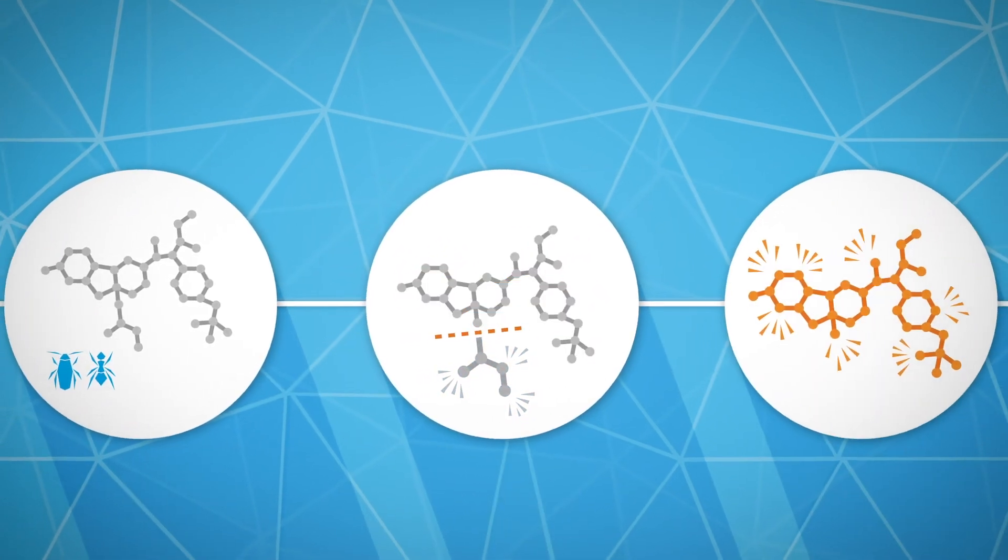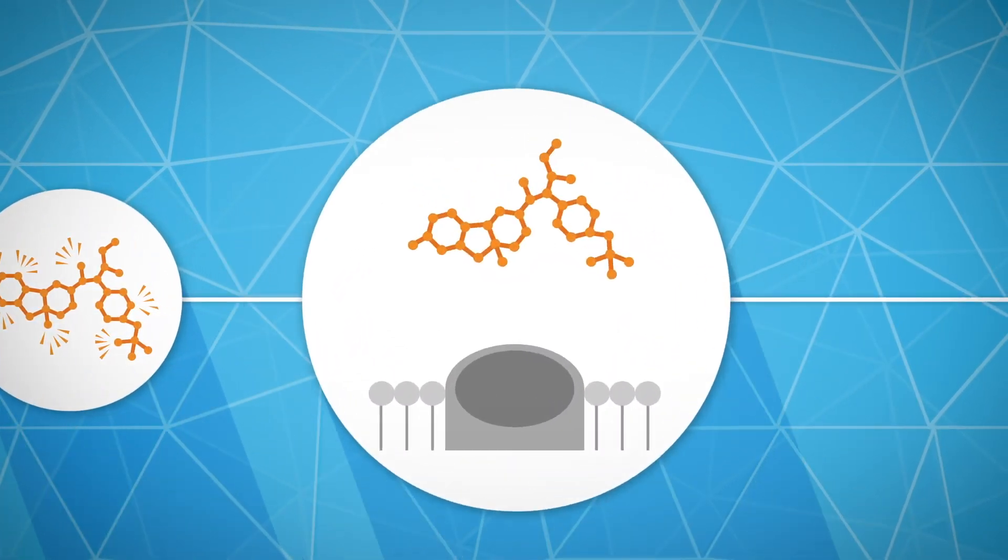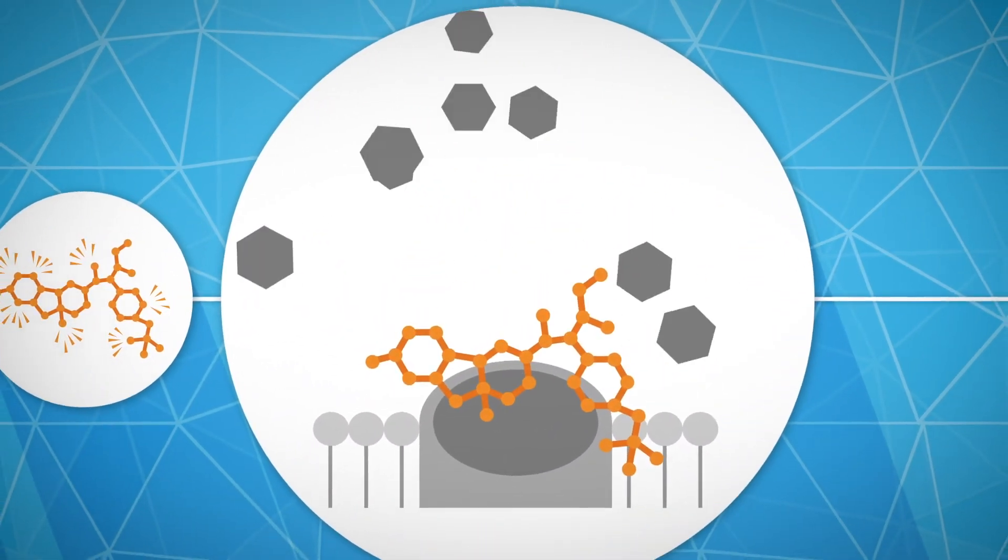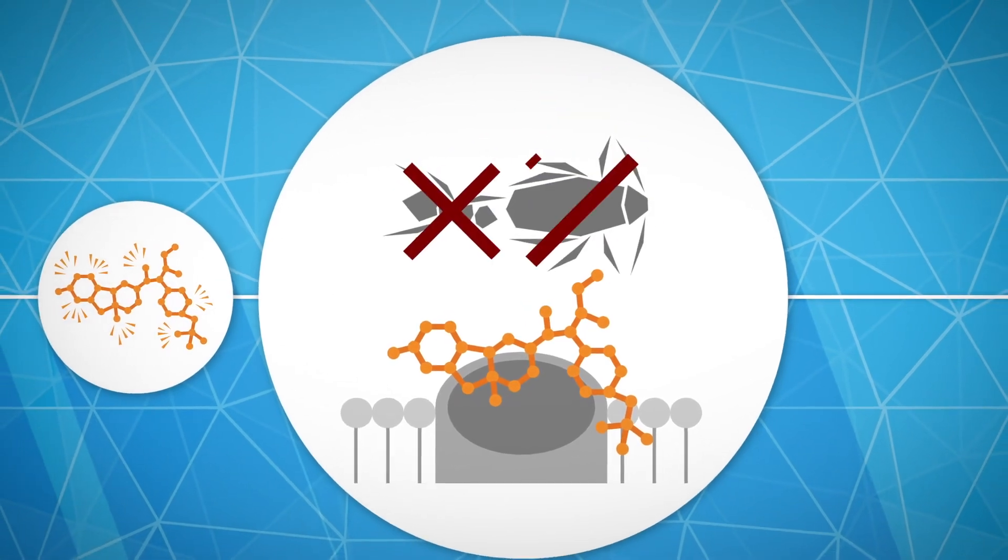Then the active form binds to the target sites in the nervous system, which blocks the insect's sodium channels, leading to paralysis and death.